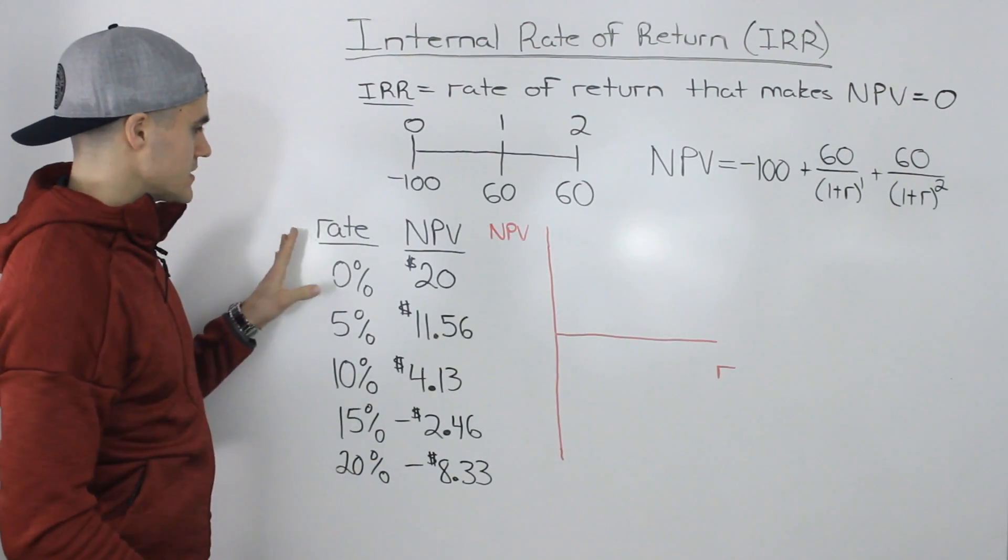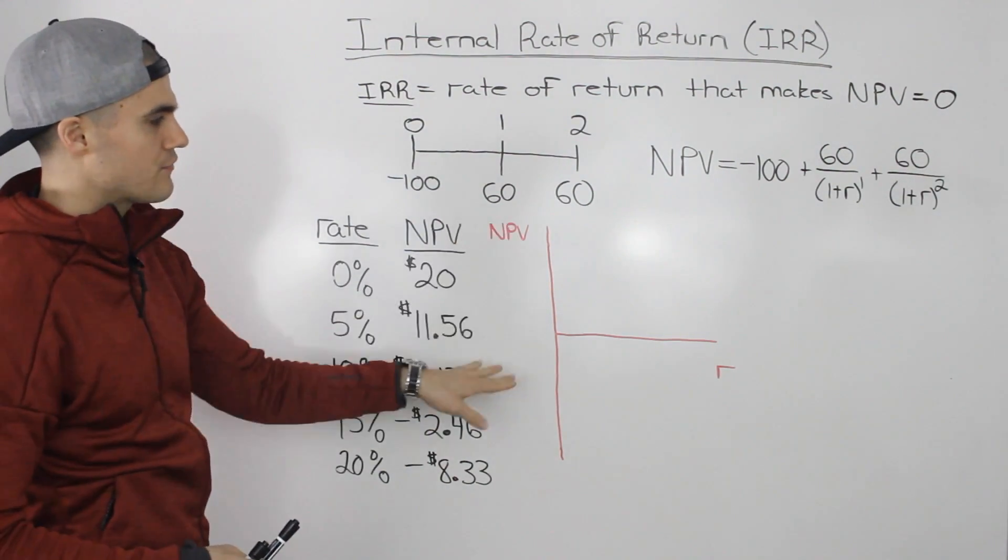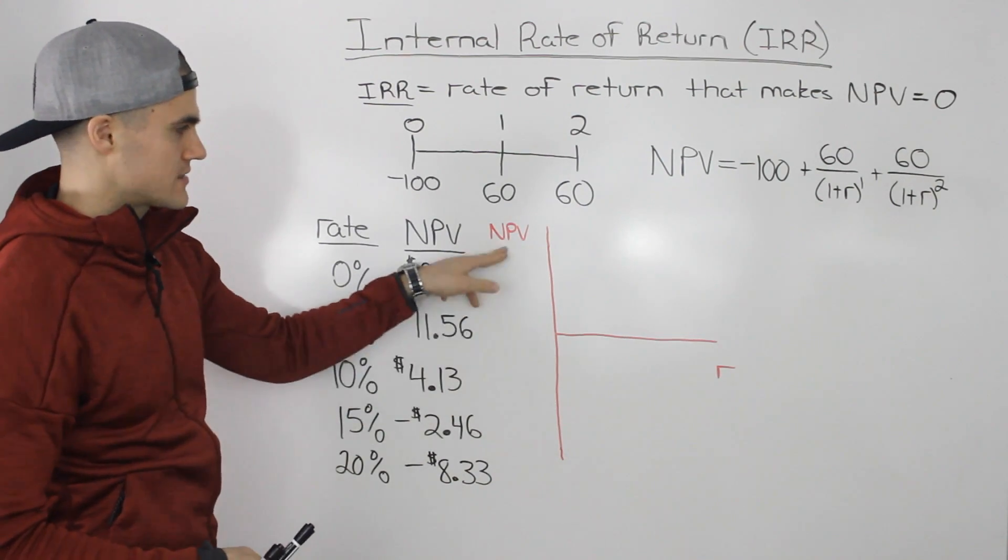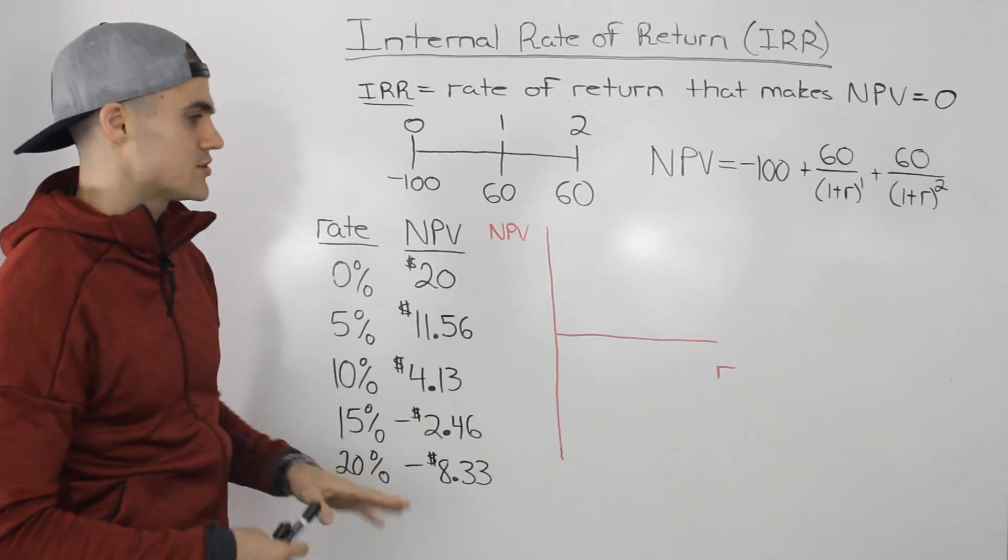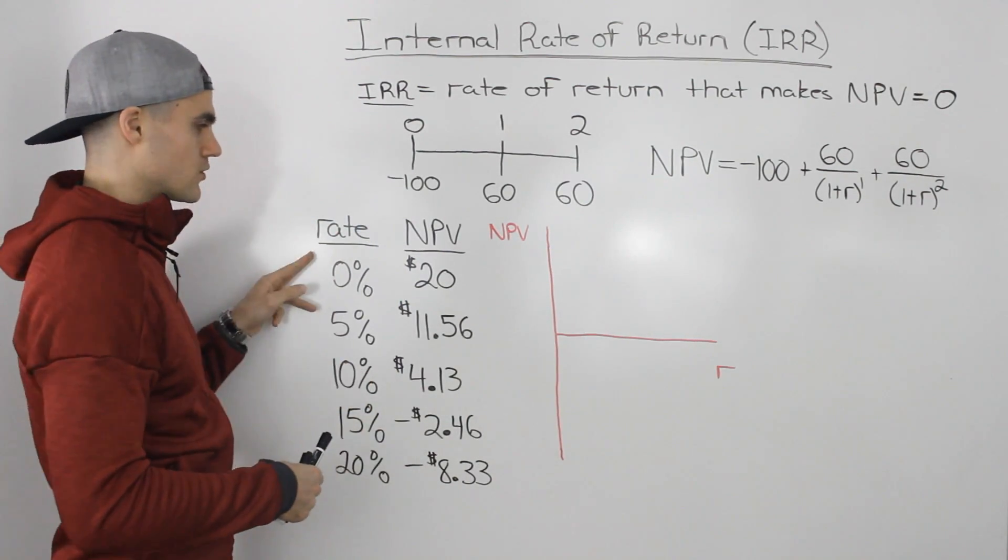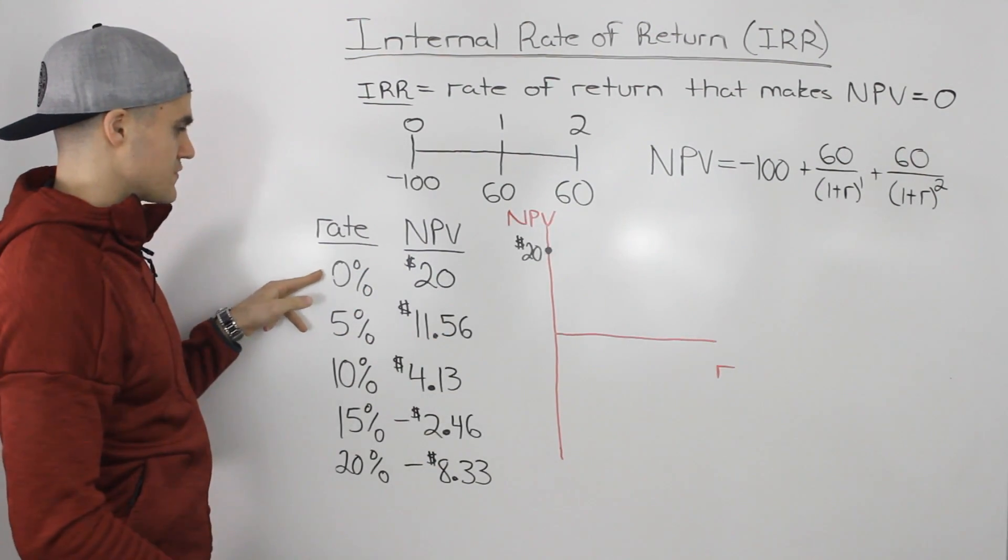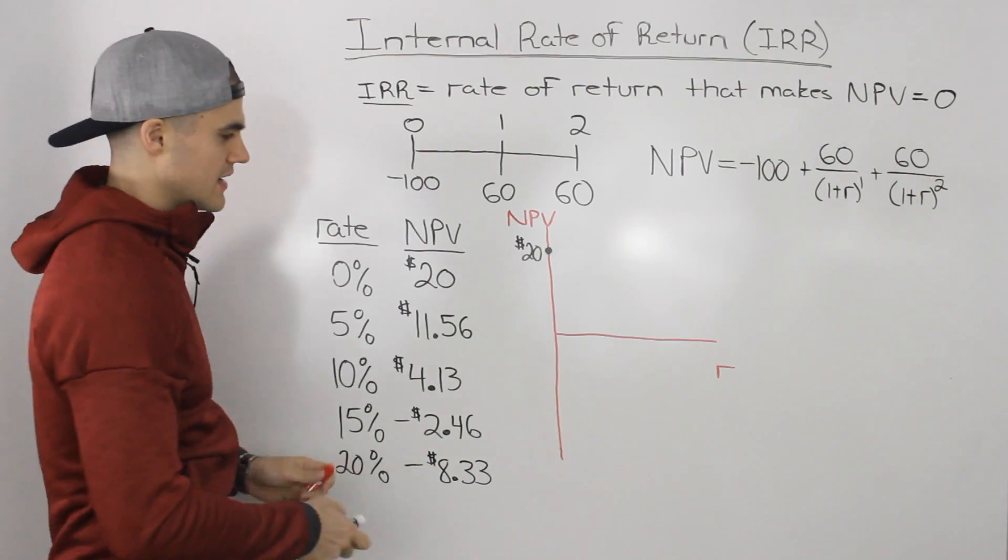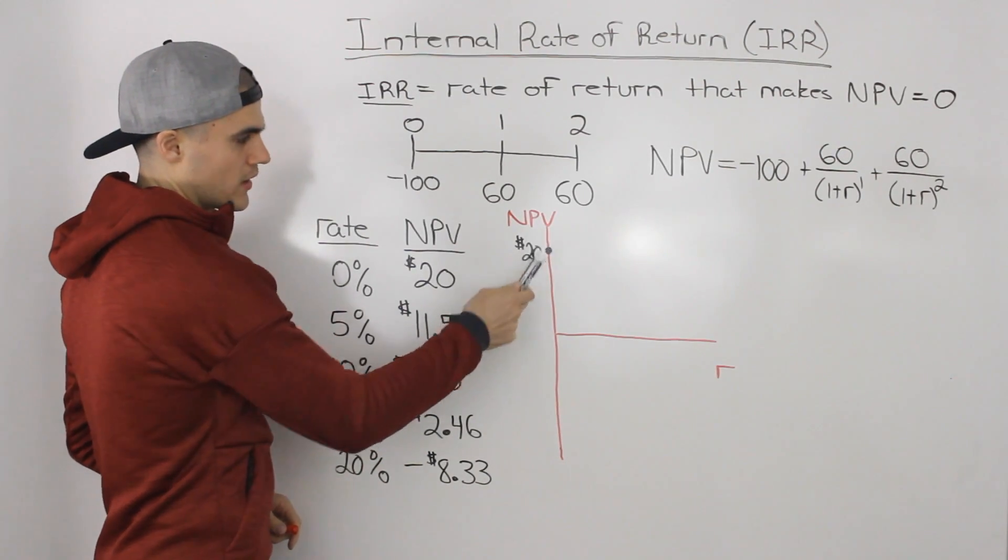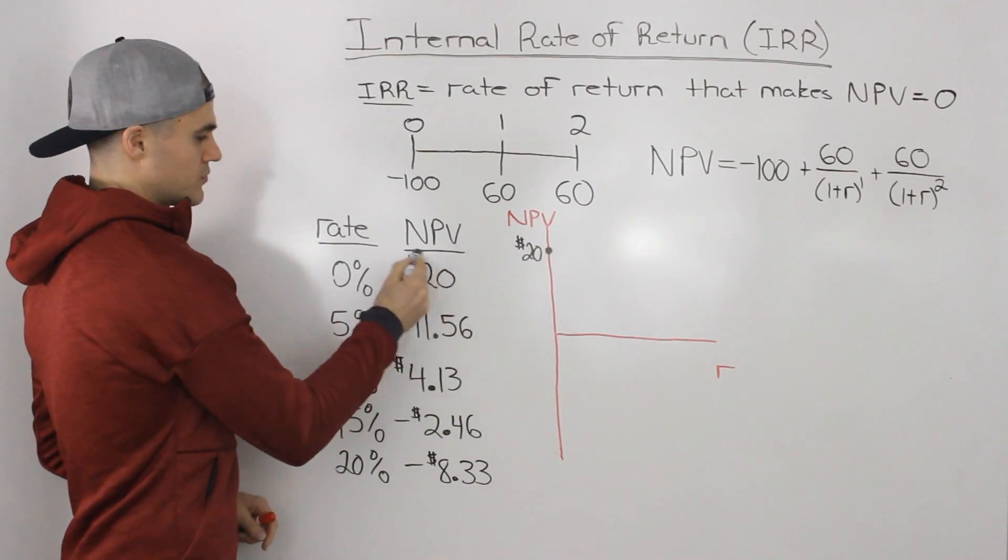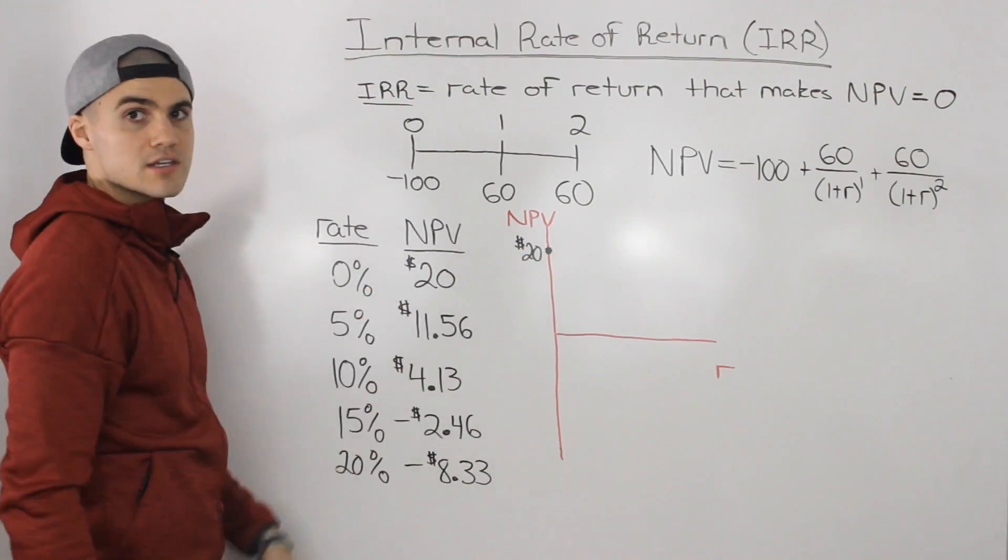So now what I'm going to do is I'm going to take these rates and their respective NPVs for this project and I'm going to graph them. So on the y-axis is going to be the NPV and then on the x-axis is going to be the discount rate. Just so we can see visually what the relationship between the rate and the NPV is. So the first point I'm going to plot here is this first coordinate. So at a discount rate of zero percent, which is here, the NPV is going to be $20, which is up here. So this point represents this relationship right here. At a discount rate of zero percent the NPV is $20.